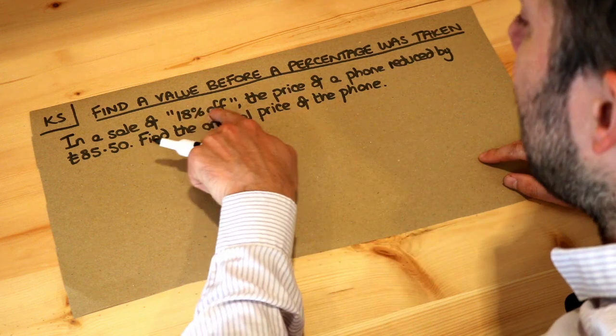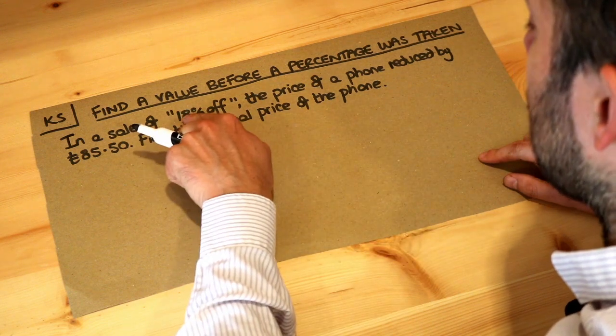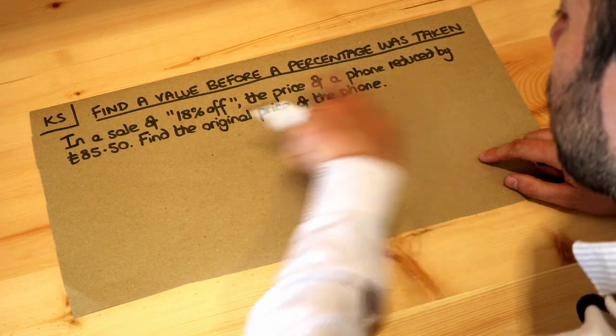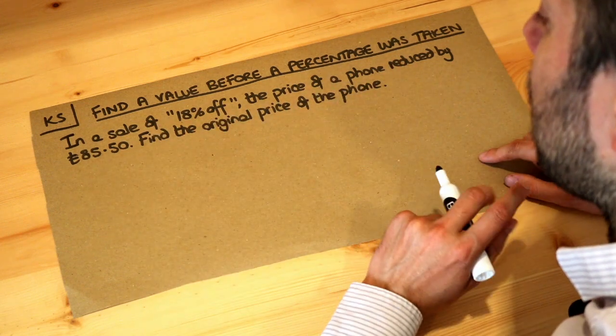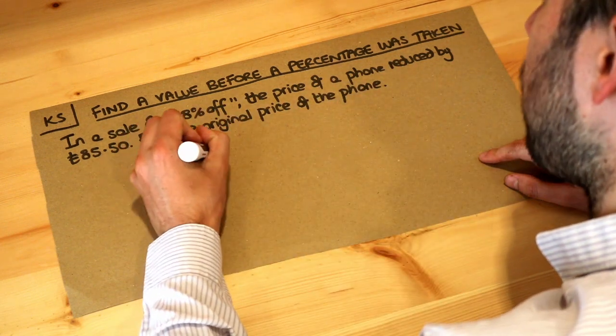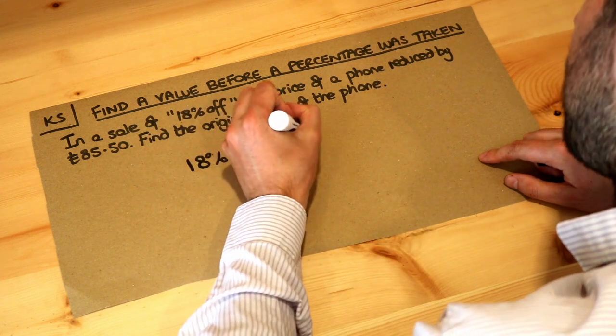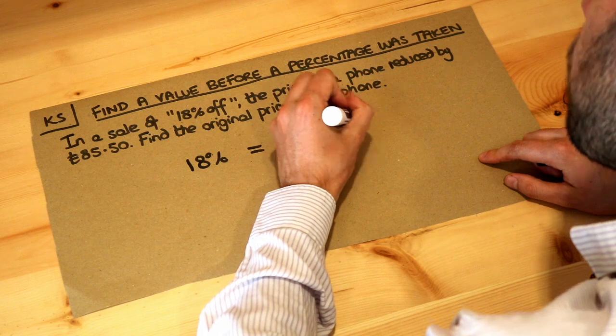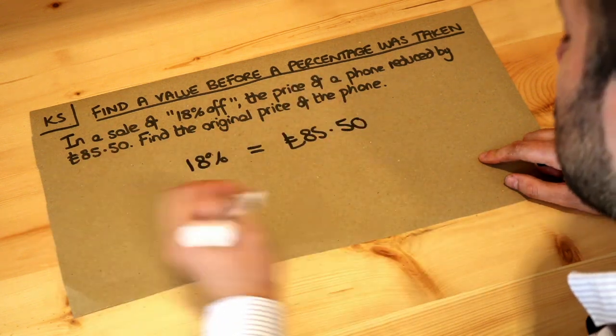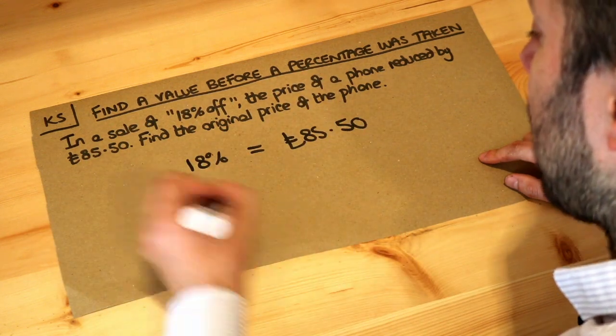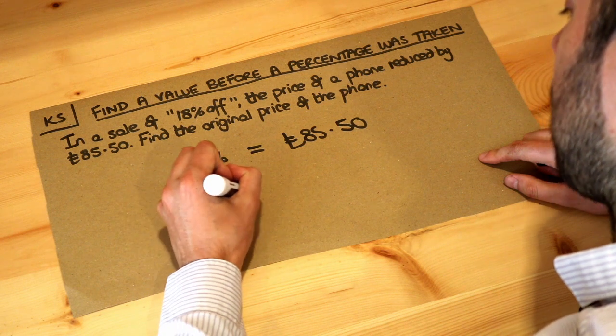Now we're told that we had 18% off, an 18% reduction, and we're also told that reduction was £85.50. So the 18% of the value of the phone was equal to £85.50, and we need to find the full value of the phone, the original price, which is 100%. So how do we get to 100% of the value of the phone?